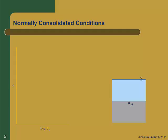We are going to start with a point A that is just below the bottom of the ocean in a depositional environment. Right now point A is at a very low vertical effective stress, shown by point 1 on our compression plot. As sediment is deposited on top of A it will continue to consolidate and it will travel from point 1 to point 2 along the virgin curve.